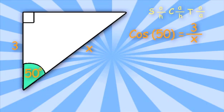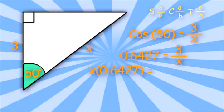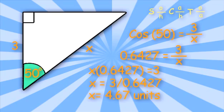Using my calculator, cosine of 50 equals 0.6427. So I'll write 0.6427 equals 3 over x. Now I have to find the value of x, so I'll multiply by x on both sides of the equation: x times 0.6427 equals 3. Now we'll divide by 0.6427 on both sides: x equals 3 divided by 0.6427. So our final answer, x equals 4.67 units.